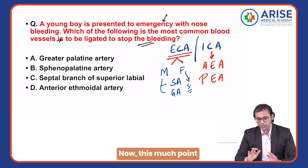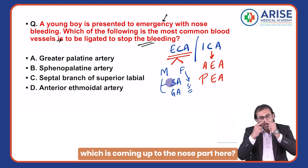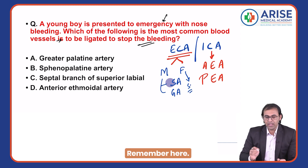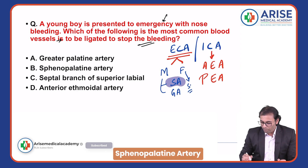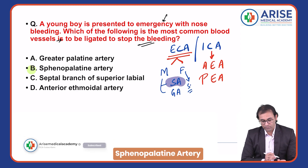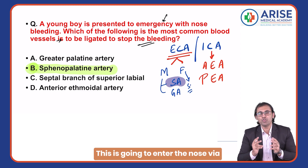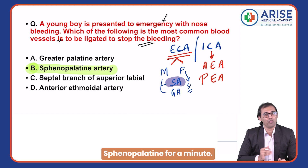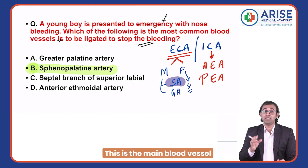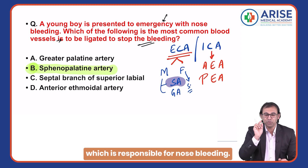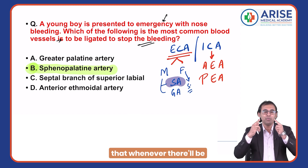The main blood vessel supplying the nose is the sphenopalatine artery. The sphenopalatine artery enters the nose via the sphenopalatine foramen. It is known as the artery of epistaxis — this is the main blood vessel responsible for nose bleeding.